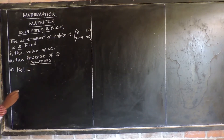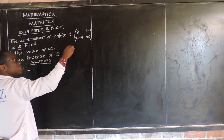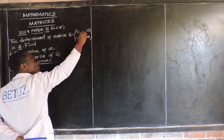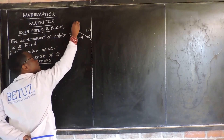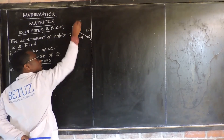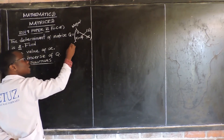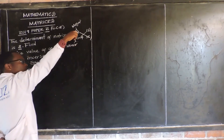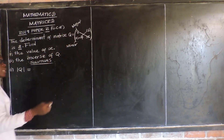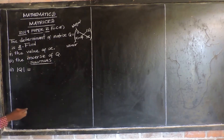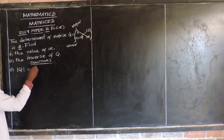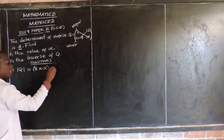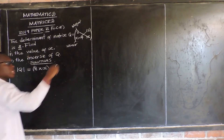How do we find the determinant of this matrix? We know that the determinant is found by finding the product of the major diagonal — this is our major diagonal — then we subtract the product of the minor diagonal. So first we find the product of the major diagonal, then subtract the product of the minor diagonal.